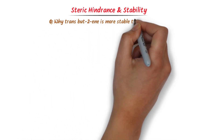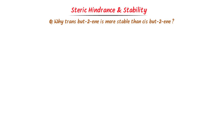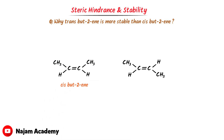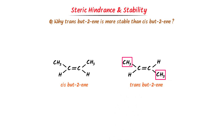An important board question: why is trans-but-2-ene more stable than cis-but-2-ene? Consider these organic compounds. In cis-but-2-ene, the alkyl groups are present at the same side or adjacent site. While in trans-but-2-ene, the alkyl groups are present at opposite sites.